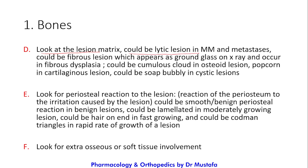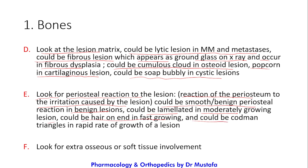Then look at the lesion matrix: it could be a lytic lesion as in multiple myeloma and metastasis; a fibrous lesion appearing as ground glass on X-ray, seen in fibrous dysplasia; cumulus cloud in osteoid lesions; popcorn in cartilaginous lesions; or soap-bubble in cystic lesions. Also look for the periosteal reaction — it can be smooth in benign lesions, laminated in moderately growing lesions, hair-on-end in fast-growing lesions, or Codman's triangle in rapidly growing lesions.